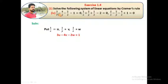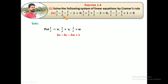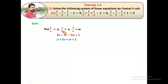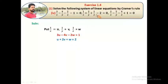So the first equation becomes: 3/x = 3u, minus 4/y = 4v, minus 2w, minus 1 equals plus 1. The second equation gives us u plus 2v plus w equal to 2.